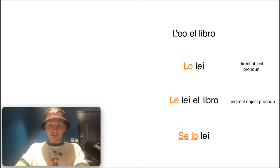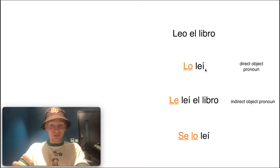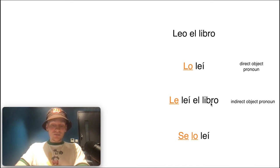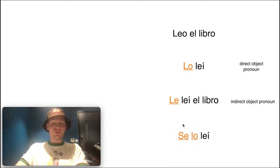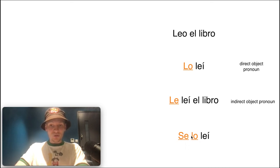Let me spell this out clearly. We started with leo el libro. Then replacing 'the book' with 'it': lo leí — lo is the direct object pronoun (note: lo leí, not leí lo). Then: le leí el libro — 'I read the book to him or to her,' where le is the indirect object pronoun. Combined, the indirect pronoun changes to se and comes before the direct object: se lo leí — 'I read it to him or to her.'